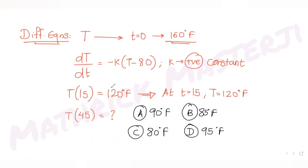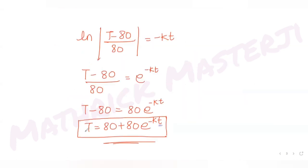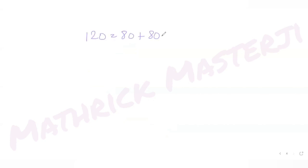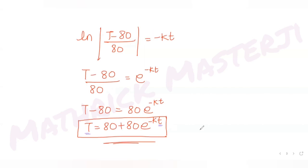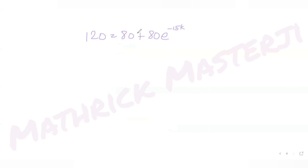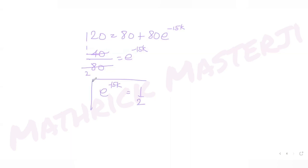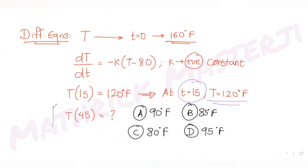Now applying the given condition: at time t equals 15, the temperature is 120 degrees Fahrenheit. Substituting into our expression: 120 equals 80 plus 80 times e raised to minus 15k. So 120 minus 80 equals 40, and 40 divided by 80 gives e raised to minus 15k equals one half. So we get the value e raised to minus 15k equals 1/2.